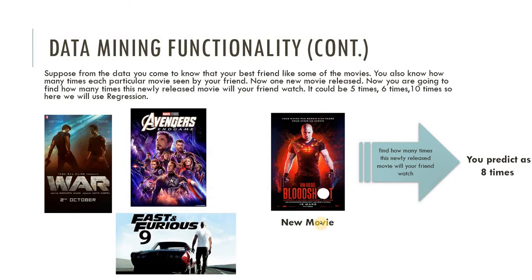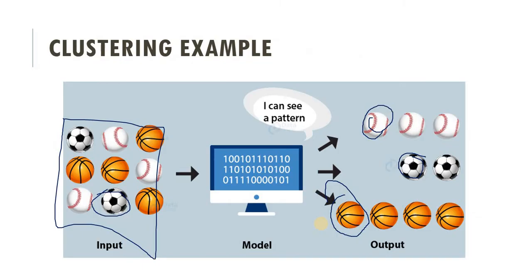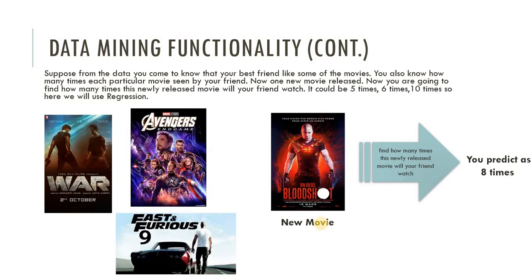In today's session we learned two different data mining functionalities. In clustering, we divide data points into different clusters where data points in the same cluster are more similar than those in different clusters. The second functionality is regression, which is used to predict the values of individuals based on their previous data — as illustrated in the movie example where we predicted how many times a friend would watch a new movie. I hope you are now clear on what clustering and regression are. Thank you for listening. Have a great day.